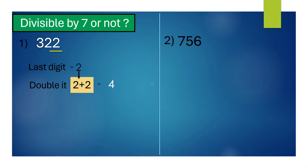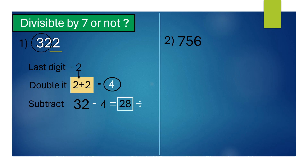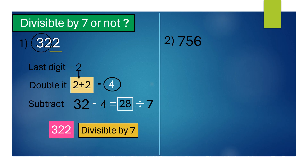Now subtract 4 from 32. We get 28, which is divisible by 7. Therefore, the given number 322 is also divisible by 7.